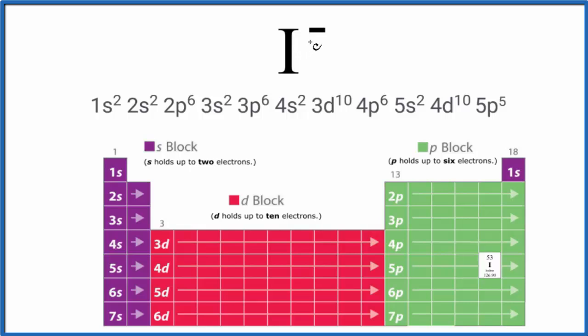So for the iodide ion, I⁻, when we see a negative, we've gained an electron. We've gained a negative charge.